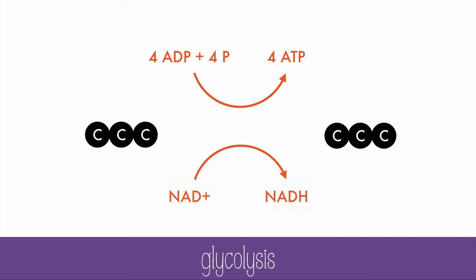So overall, glycolysis makes 2 pyruvic acids, 2 ATP, and 2 NADH. From here, there are 2 possible pathways that could be taken.